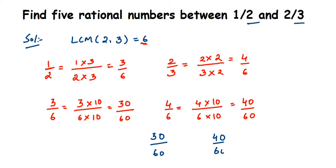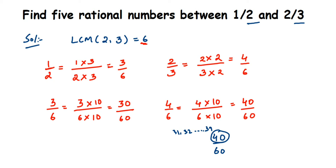Between 30/60 and 40/60 we have numbers like 31, 32, 33, 34, and so on. Do not include 30 and 40 themselves — we want numbers strictly in between. So you can pick any 5 rational numbers from this range and write them down.